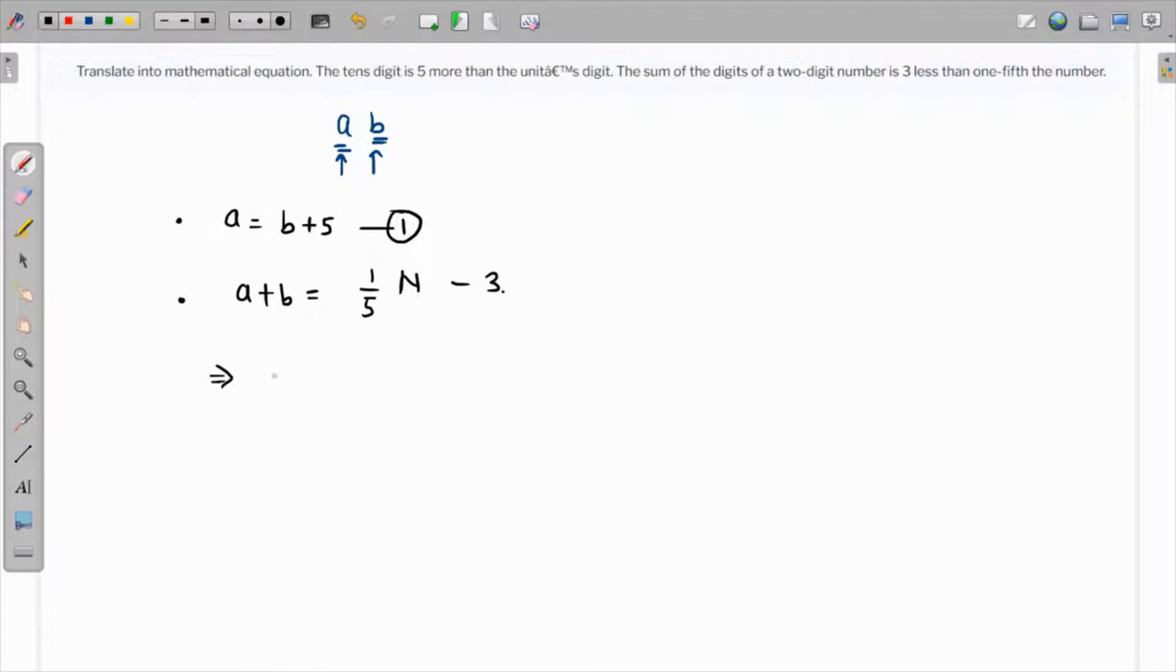But what is the number? We cannot write the number as a b, because there's a different way in which we have to write these numbers. a b would mean that a and b are in multiplication, but that is not the case.